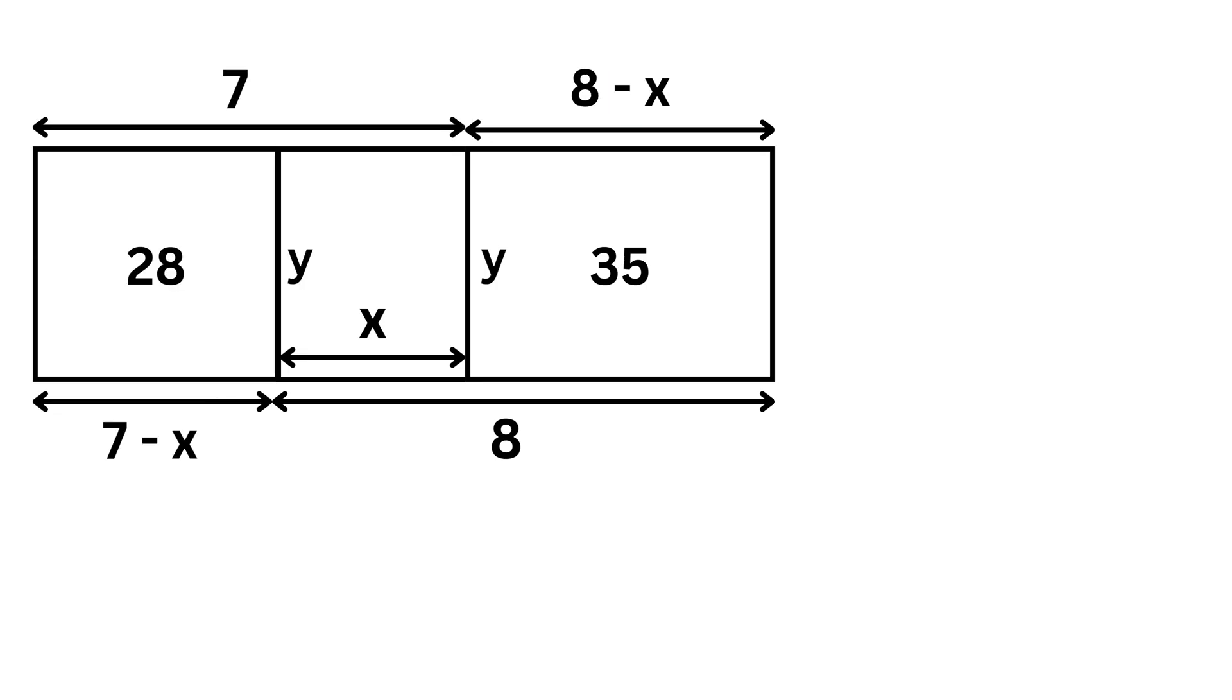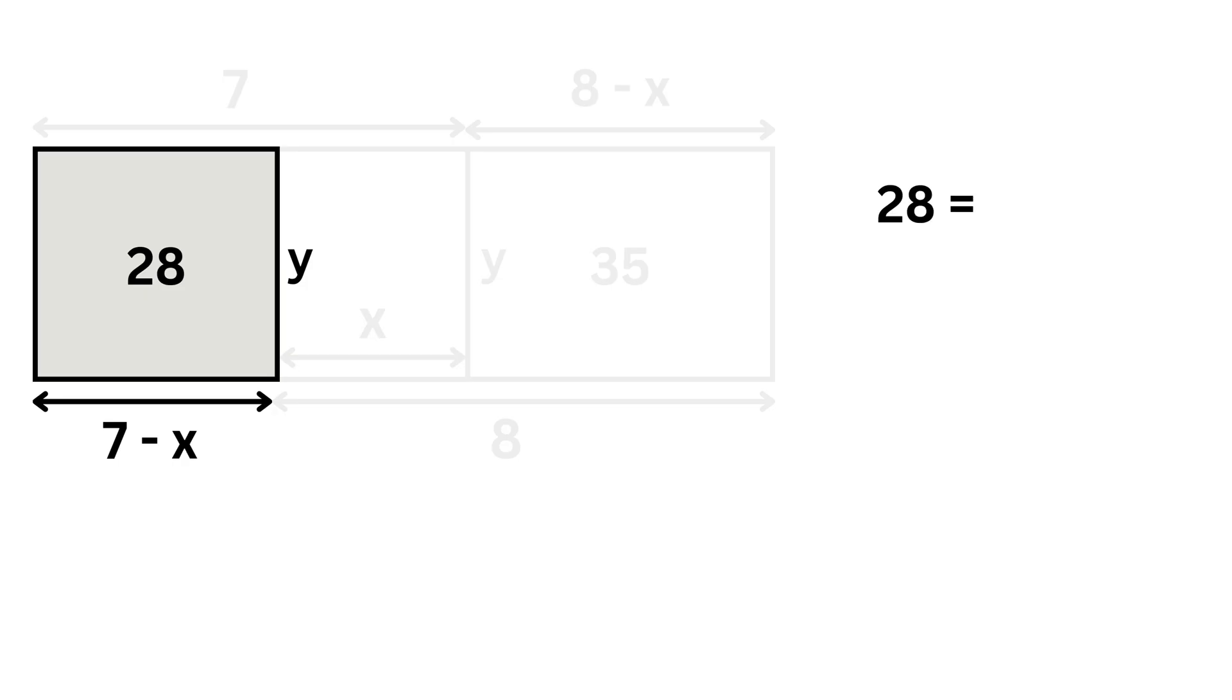Now, we already know that the area of the left rectangle is 28 square units. Using the area of the rectangle formula, which is length times width, we can write 28 equals seven minus x times y. If we open this up, we get 28 equals 7y minus xy.